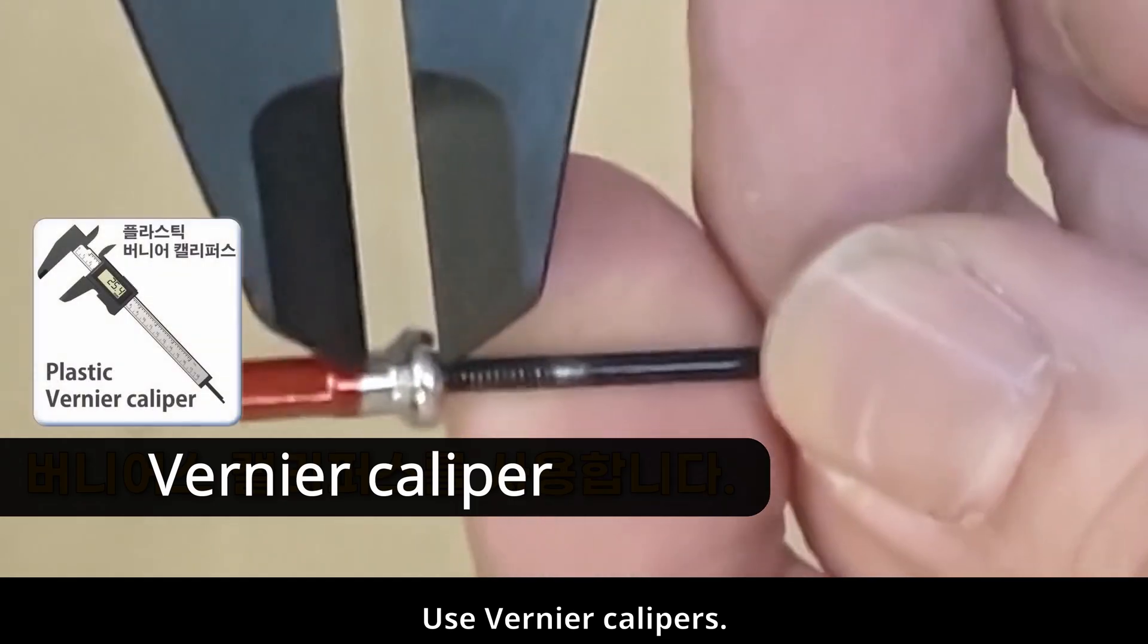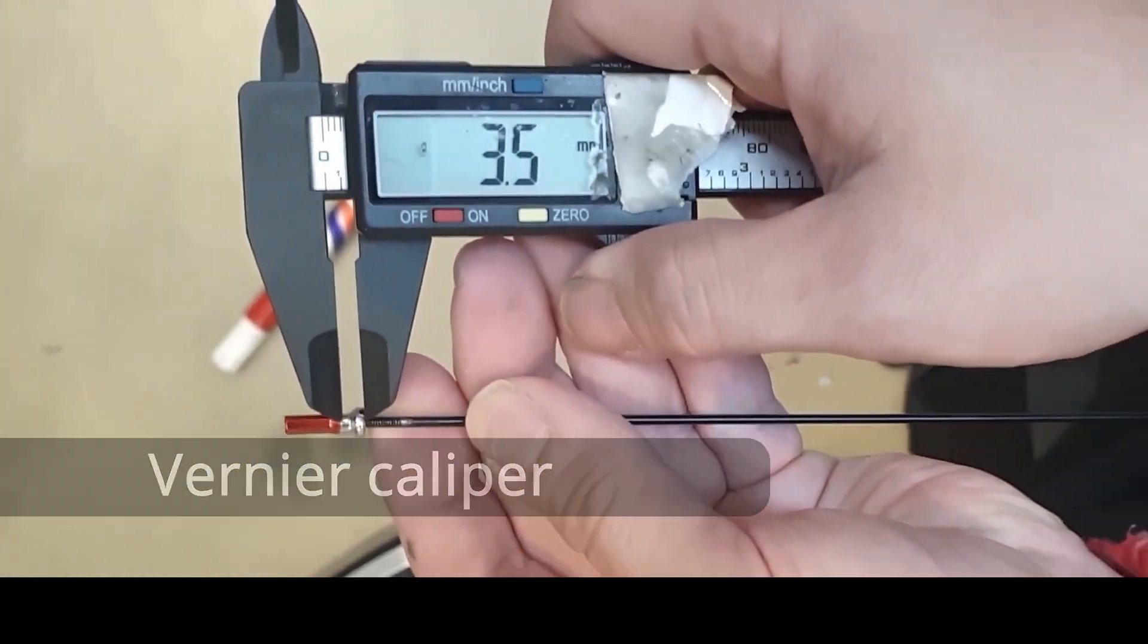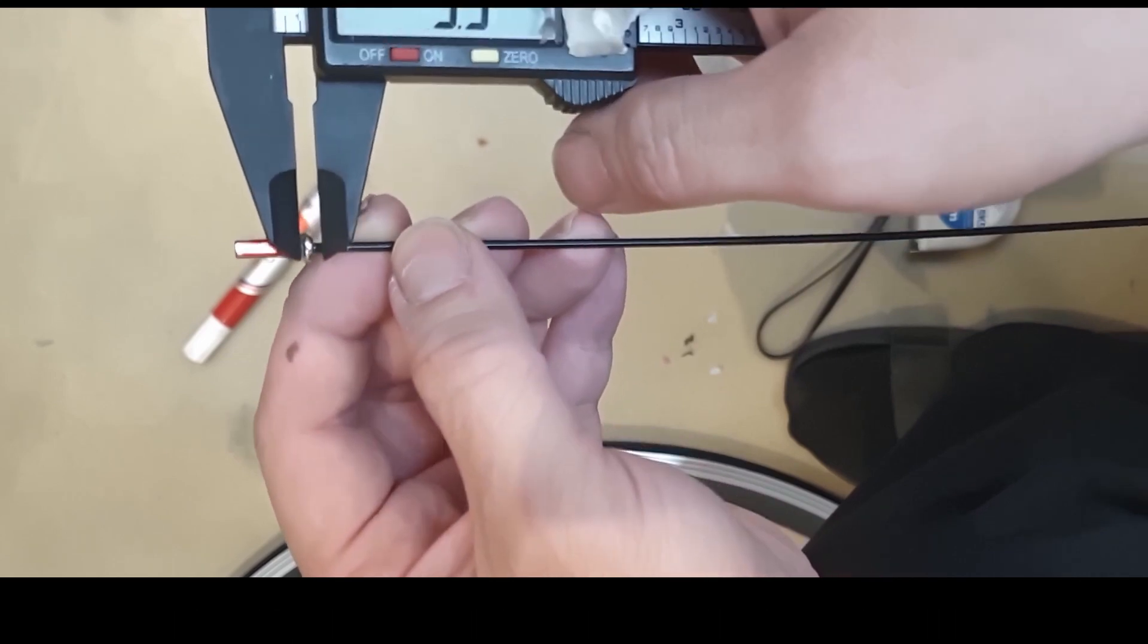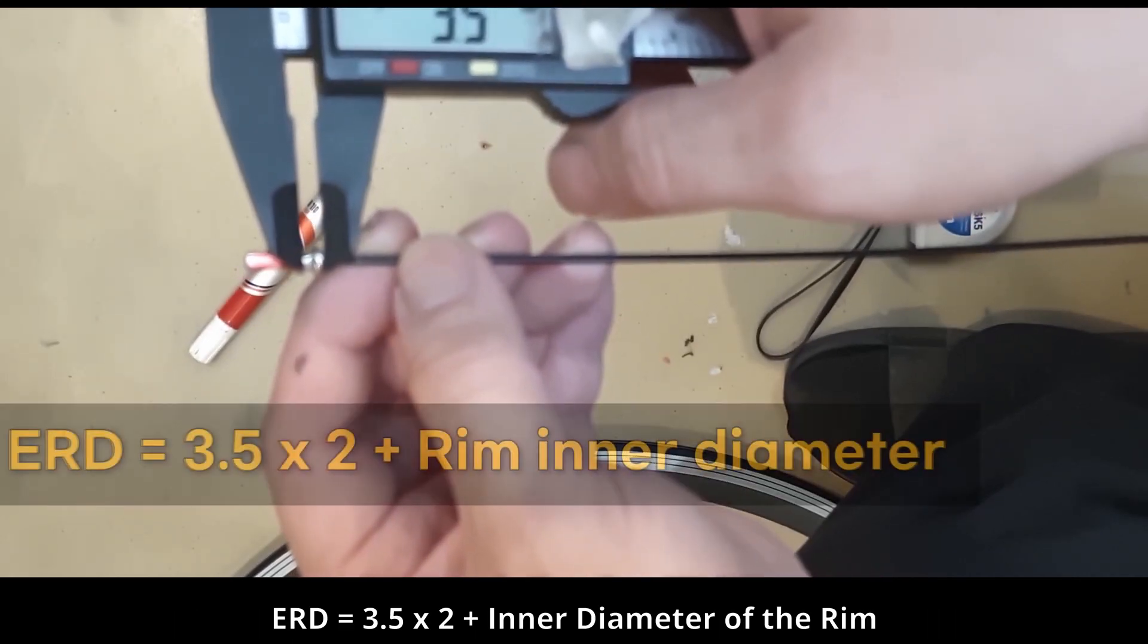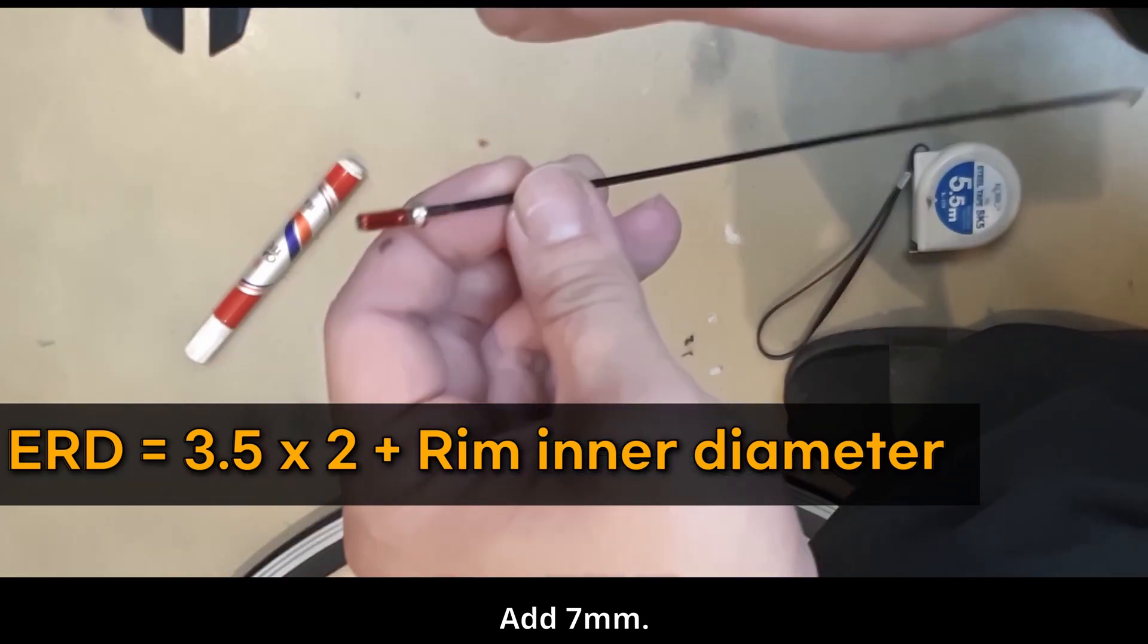Use vernier calipers. The measurement is 3.5 millimeters. Measuring the inner diameter of the rim becomes very easy. ERD equals 3.5 by 2 plus inner diameter of the rim, add 7 millimeters.